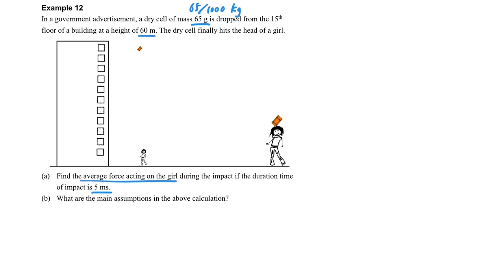How to find the average force acting on the girl? Firstly, we have to find what is the speed of the dry cell before it hits the girl. How to find this speed?